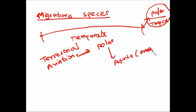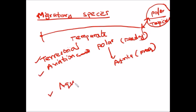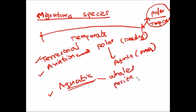Birds have the longest migratory range. Apart from aviation and terrestrial animals, there are also aquatic animals that migrate — for example, whales migrate from one ocean to another, from the Pacific Ocean to the Indian Ocean and back. So there are three types of migratory species: terrestrial, aviation or birds, and aquatic animals.